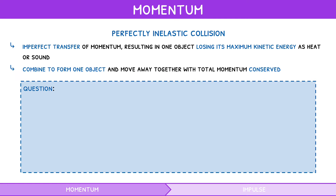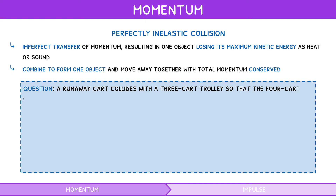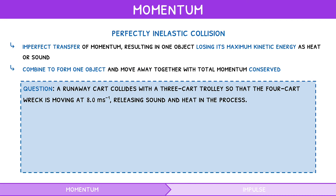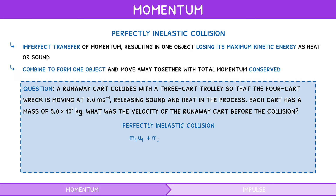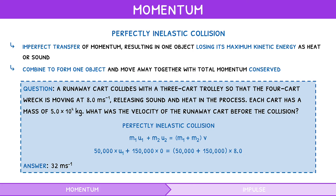Let's look at an example question. A runaway cart collides with a three-cart trolley so that the four-cart wreck is moving at 8 m/s, releasing sound and heat in the process. Each cart has a mass of 5×10⁴ kg. What is the velocity of the runaway cart before the collision? Using the perfectly inelastic formula: mass 1 times initial velocity 1 plus mass 2 times initial velocity 2 equals (mass 1 plus mass 2) times final velocity. Rearranging gives a velocity of 32 m/s.